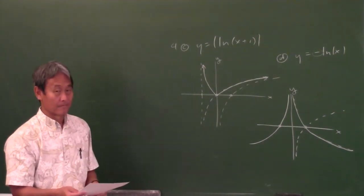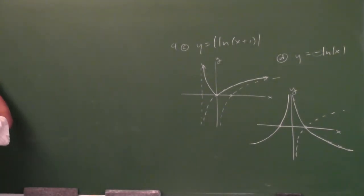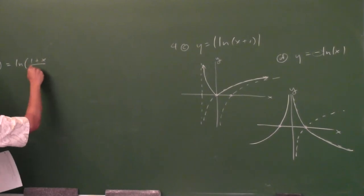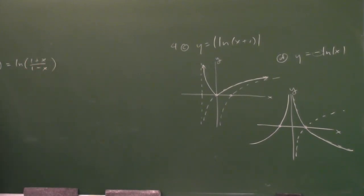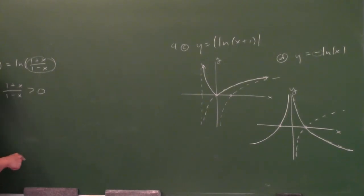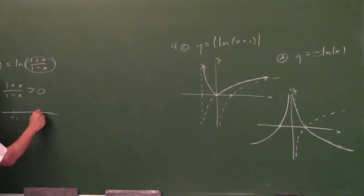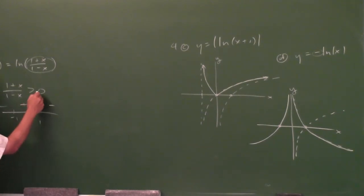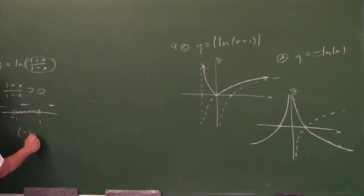Can you do the domain? Number 8: f of x equals natural log of (1 plus x) over (1 minus x). How do you find the domain of a logarithmic function? The argument has to be greater than zero. You write that on your paper, I give you one point. Now you've got to solve the inequality — make one side zero, factor it, make a number line. The critical points are negative one and one. We're looking for greater than zero, so the domain is from negative one to one, not inclusive.